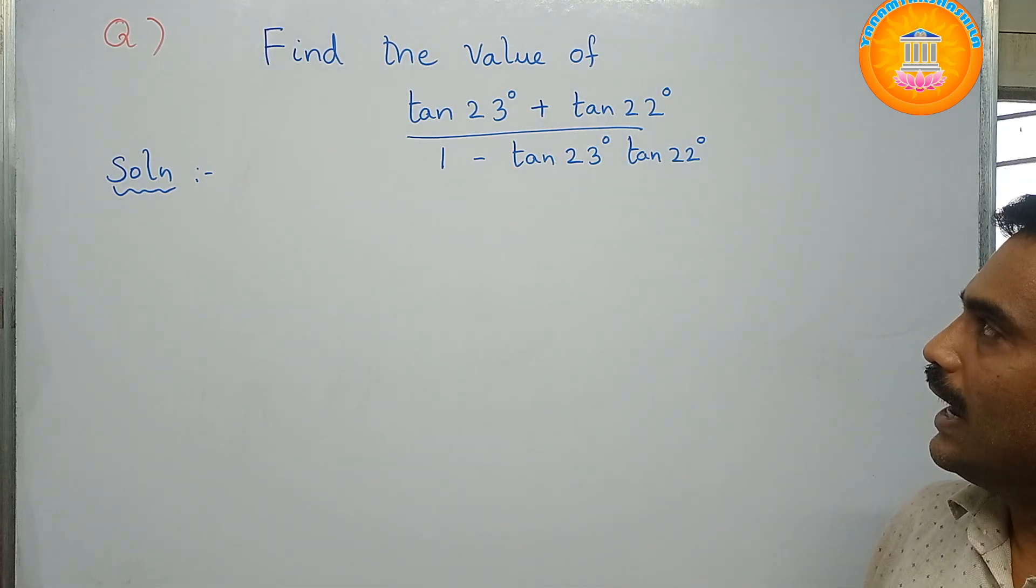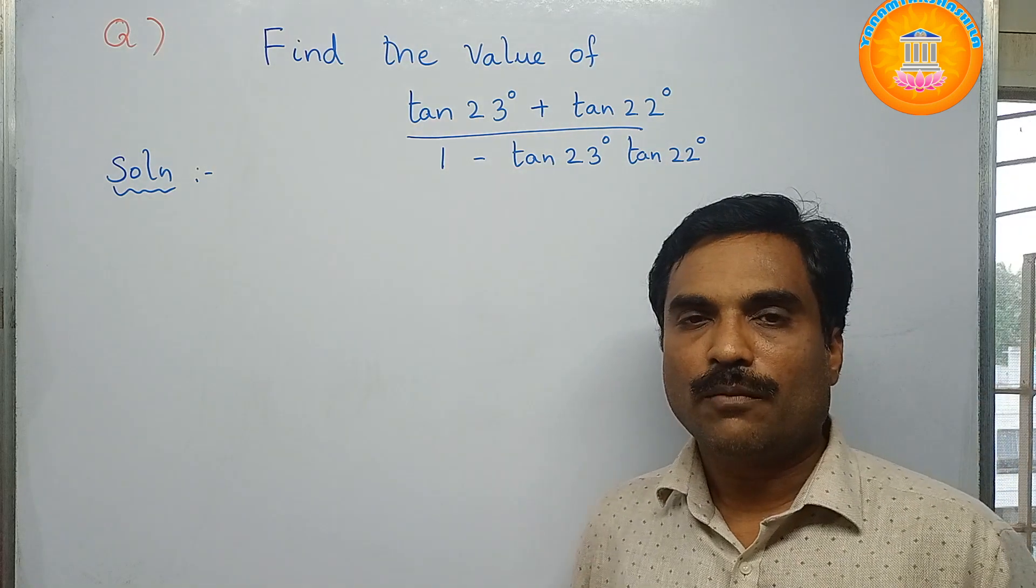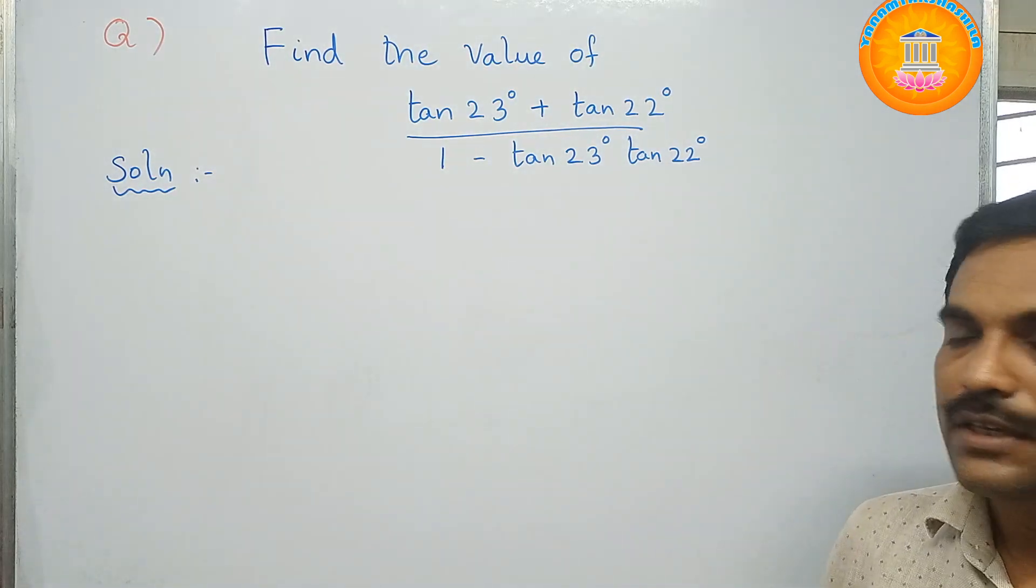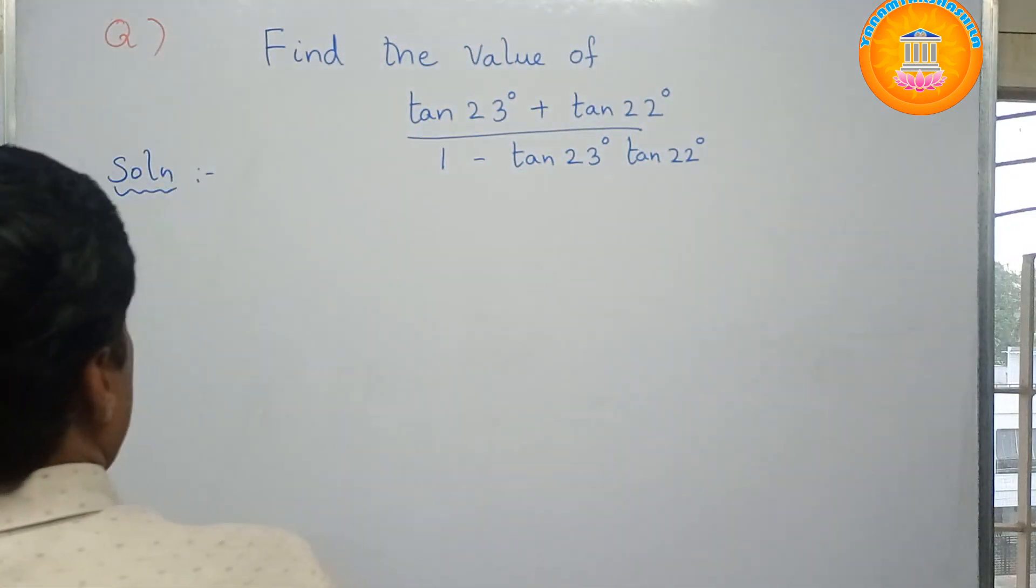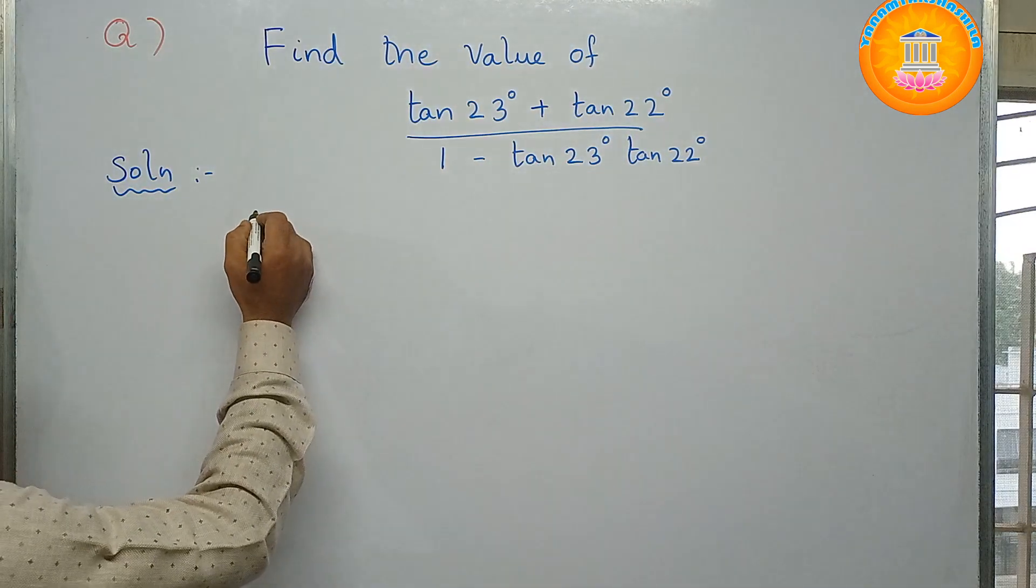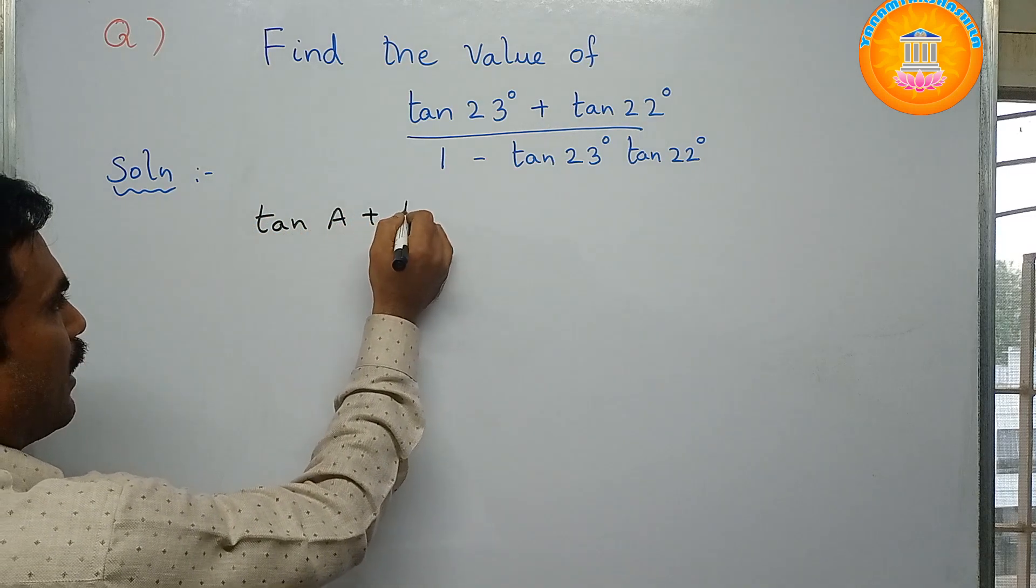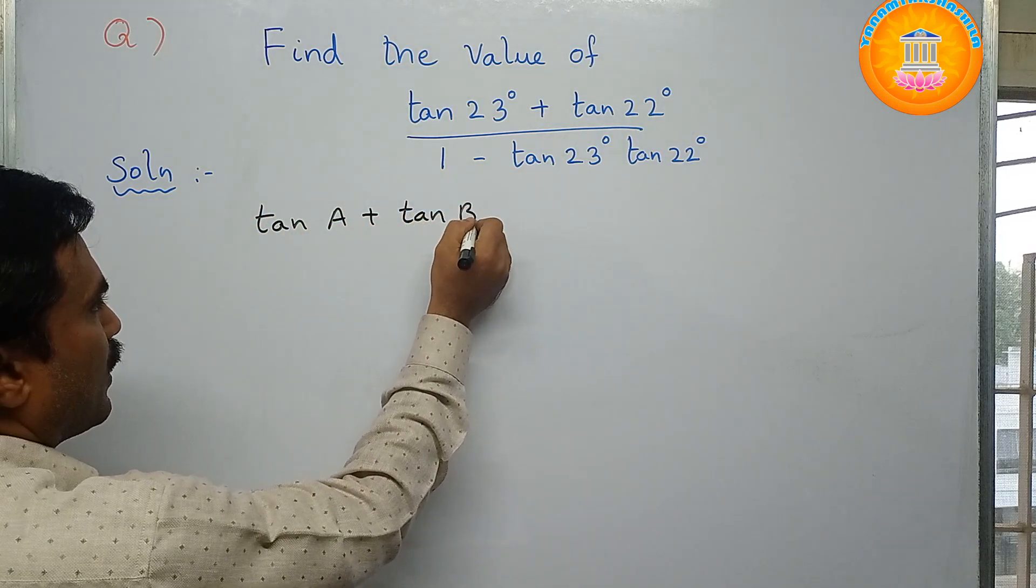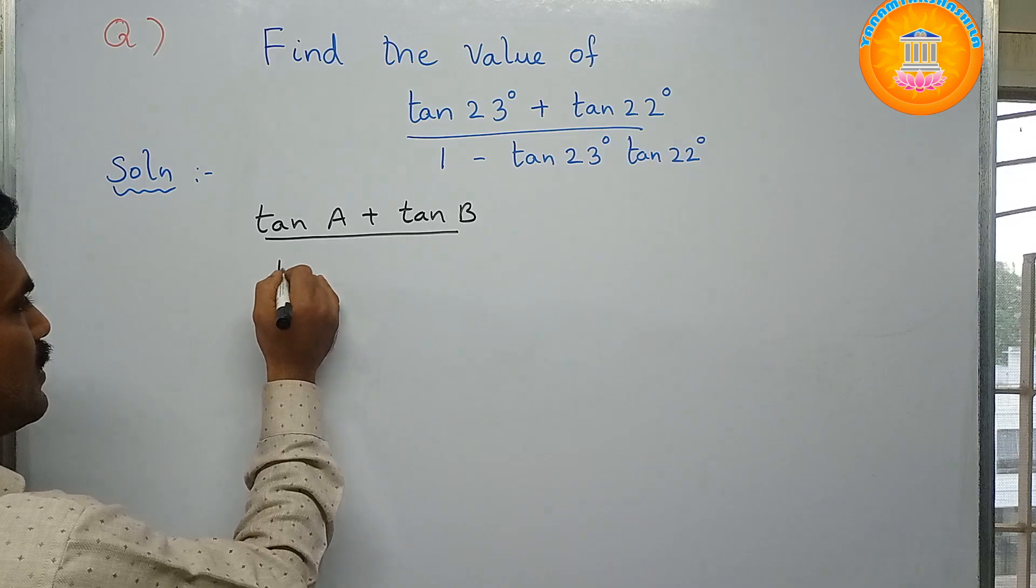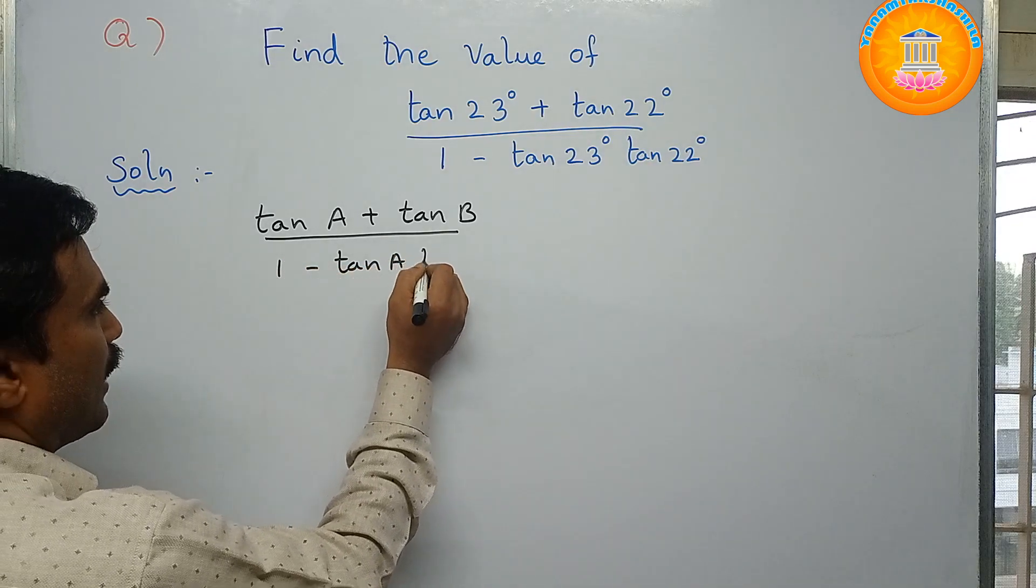Then you need to apply the formula of tan of A plus B. So first we write the formula here. We know that tan A plus tan B by 1 minus tan A tan B, this can be written as tan of A plus B.